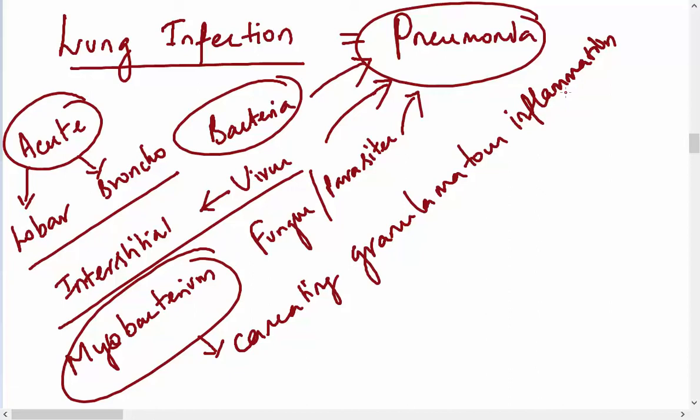We've seen different types of mycobacterium producing different types of infection, and there are different types of pulmonary tuberculosis — we classify them into primary, secondary, and tertiary. Primary tuberculosis comes in the lower part of the upper lobe or upper part of the lower lobe, with related hilar lymph node involvement. Both together are called Ghon's complex; the lung involvement alone is called Ghon's focus. With good immunity, they go for healing and calcification, seen on X-ray as Ranke's complex.